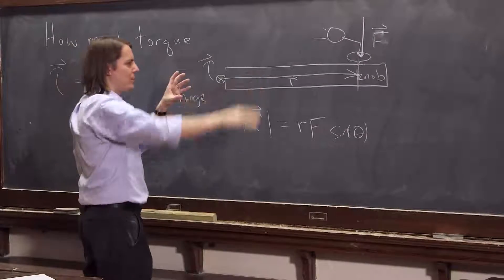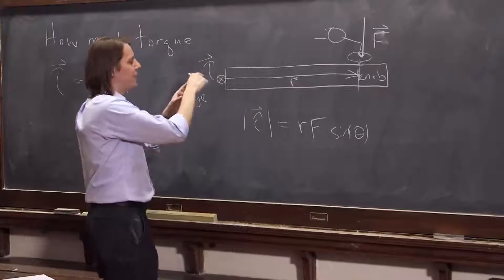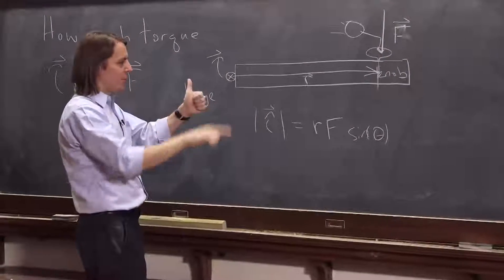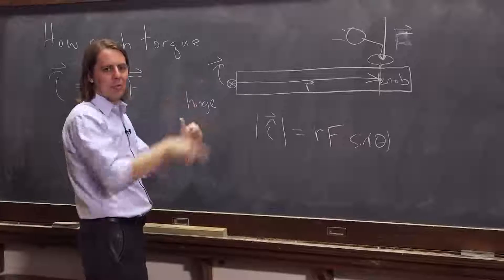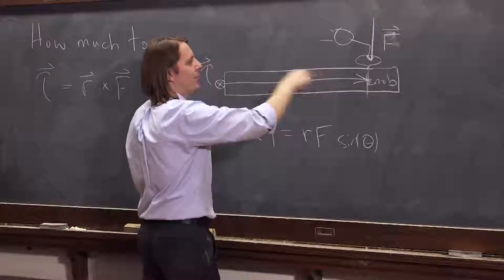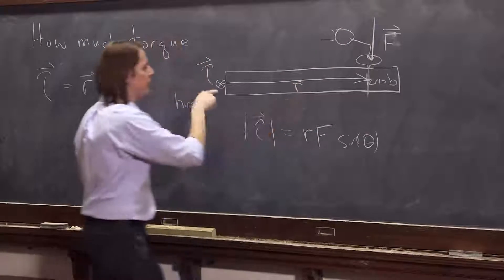So when you're making something rotate by applying a torque, the torque vector is actually perpendicular to the circle that it would make. It's normal to the circle. It's not the direction of the force. It's perpendicular to the radius and to the force. And that's the torque.